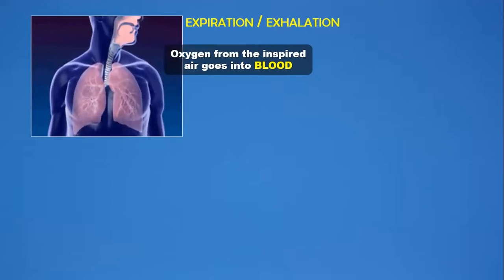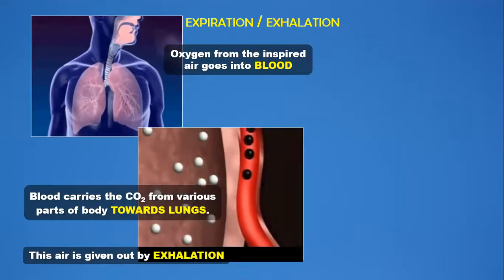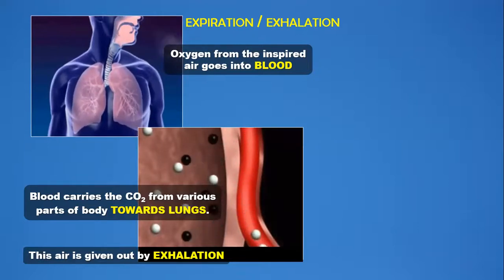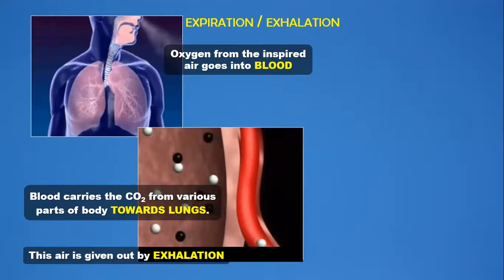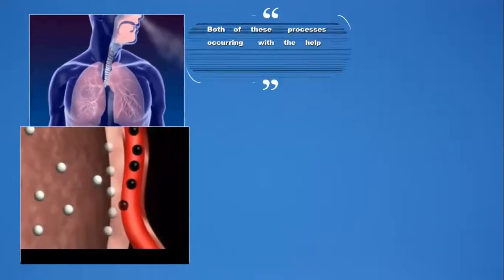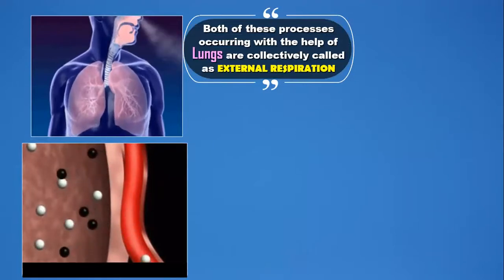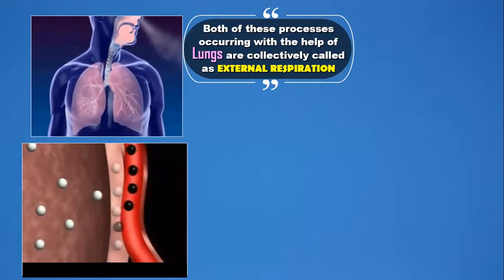Blood obviously needs oxygen for its supply. Blood carries the carbon dioxide from various parts of our body towards the lungs. Carbon in our body combines with oxygen and goes out in the form of carbon dioxide. This air is given out by exhalation. Both these processes occurring with the help of the lungs are collectively called external respiration — we are taking in oxygen and giving out carbon dioxide from outside our body through our nose.